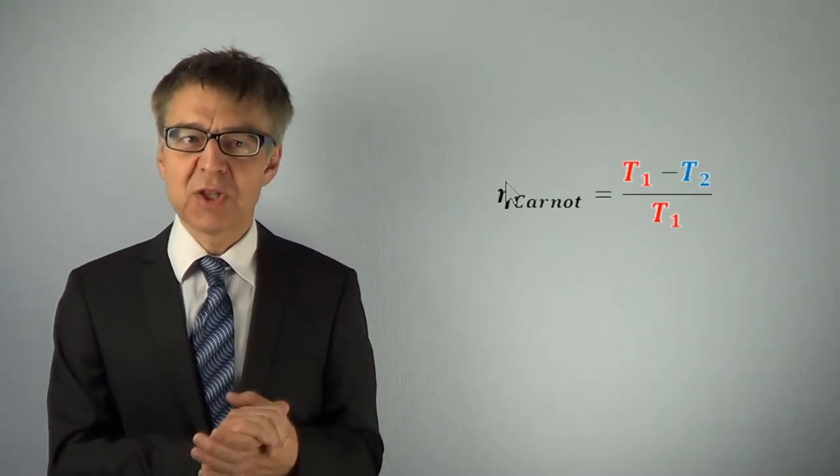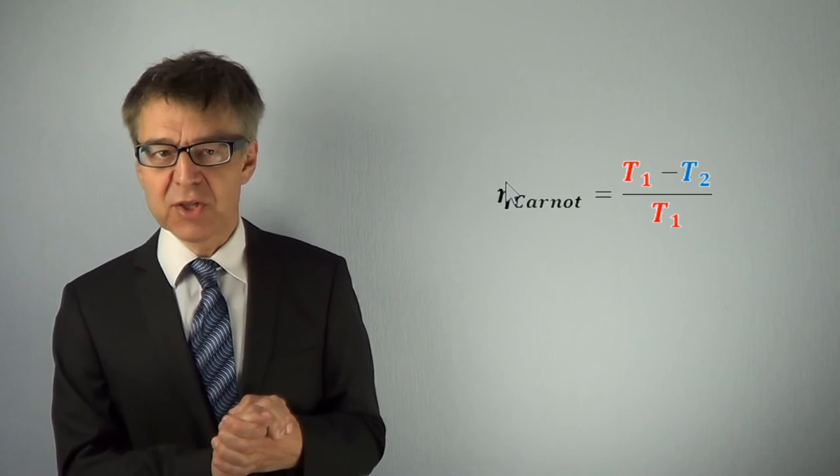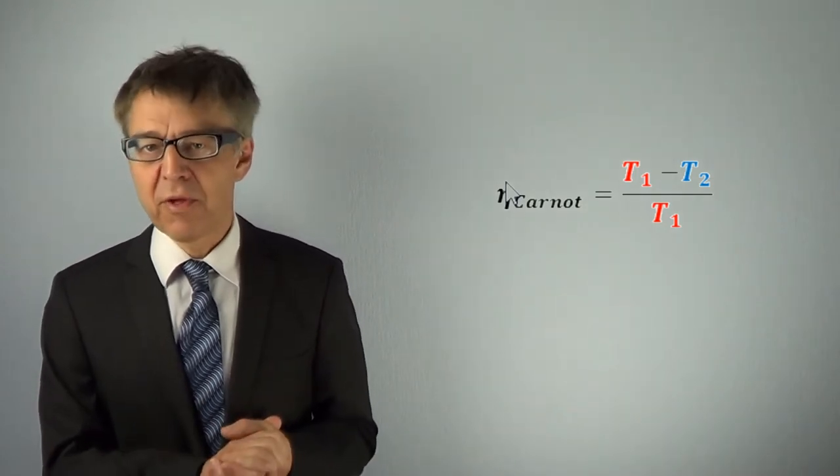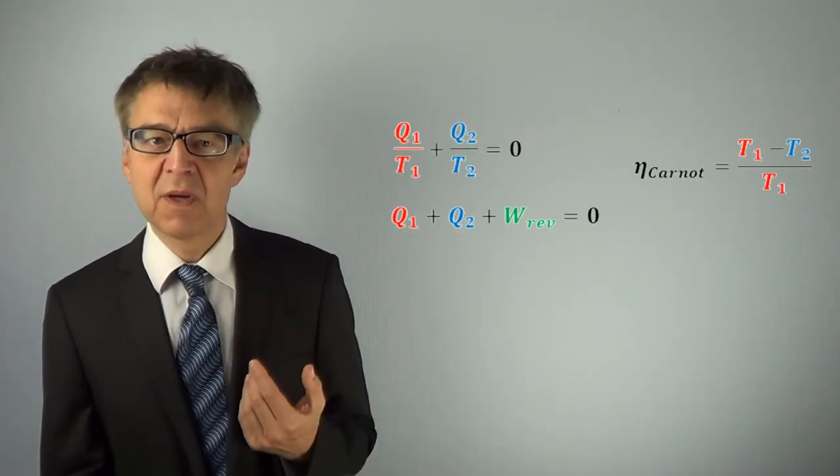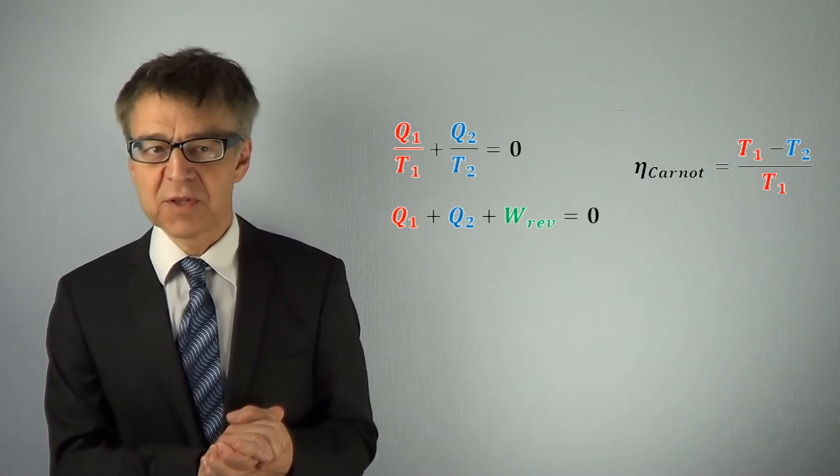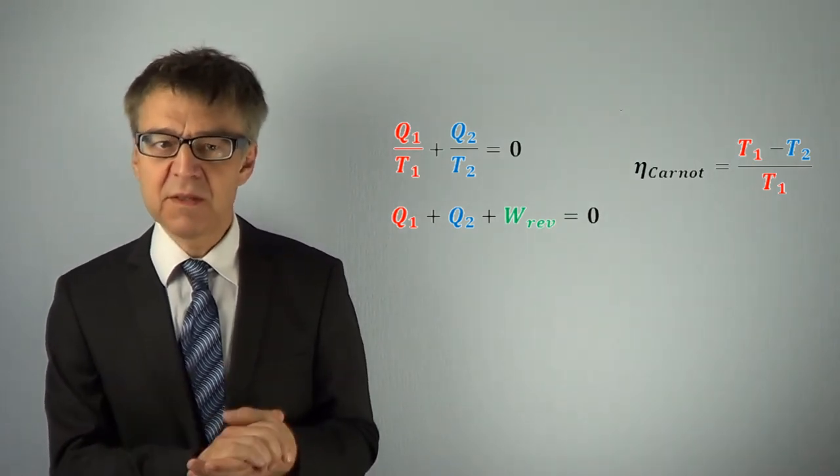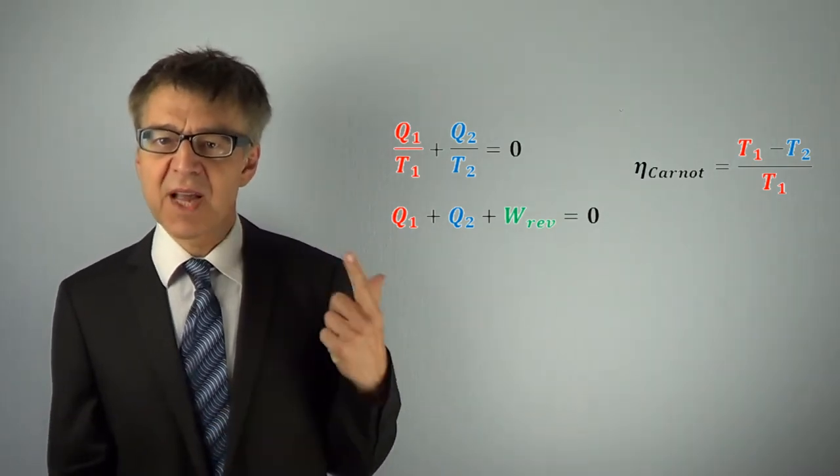This limitation applies to any heat engine, for example, for a thermal power plant or a diesel engine. Heat is some kind of non-noble form of energy and can be converted to the noble work only to some extent. The upper limit is the Carnot efficiency. The reason for this limitation is the second law.